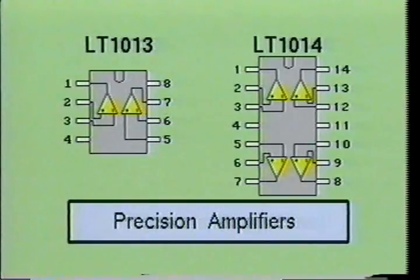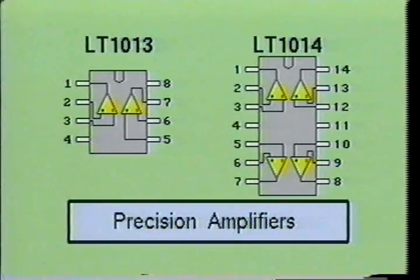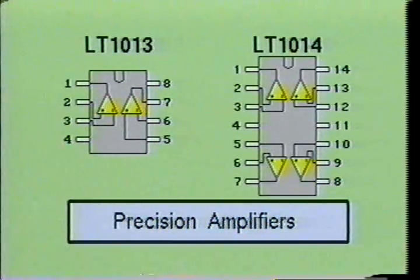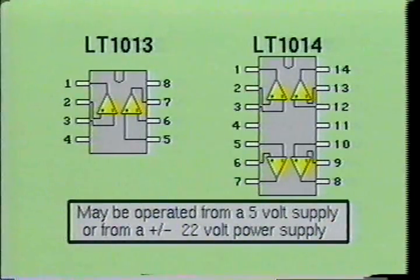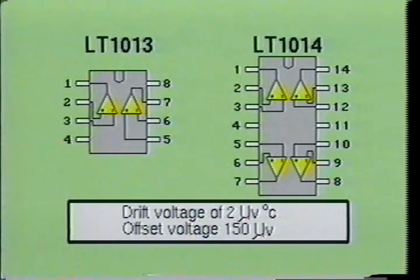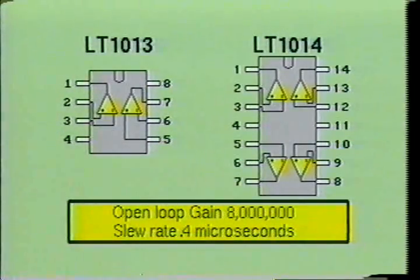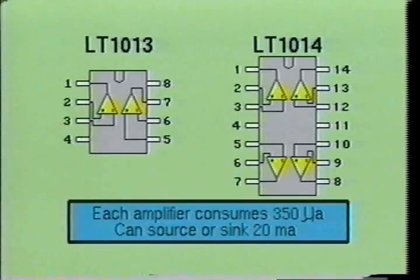Here we see two precision operational amplifiers: the LT1013 and the LT1014. Their characteristics make them especially useful in instrumentation amplifiers or any other situation where the op-amp must closely adhere to critical performance standards. These op-amps can be operated from a single 5-volt DC power supply or from a dual polarity power supply with voltages up to plus and minus 22 volts. Their drift voltage is less than 2 microvolts per degree centigrade with an offset voltage of less than 150 microvolts. The open loop gain of the LT1013 and LT1014 are in excess of 8 million with a slew rate of 0.4 microseconds. Each amplifier section will only use 350 microamps of current and can source or sink up to 20 milliamps of load current.